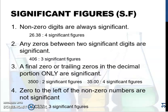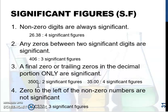Rule number three: a final zero or trailing zeros in the decimal portion only are significant. So 35,000 has only two significant figures, whereas 35.00 has four significant figures. Zeros after the decimal point are significant, compared to the case where there are no decimal places, which would only give two significant figures.